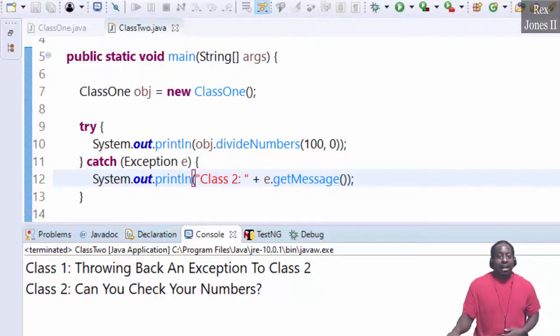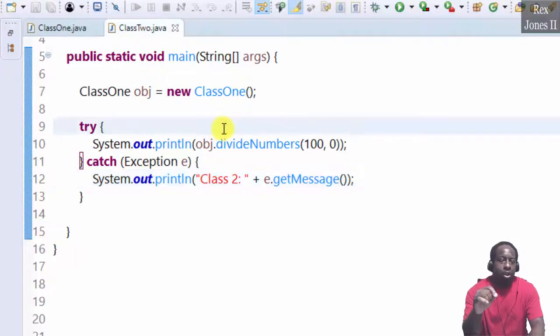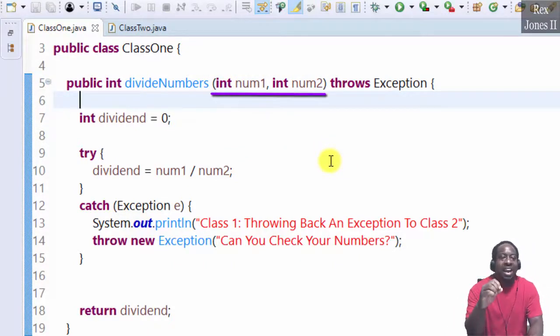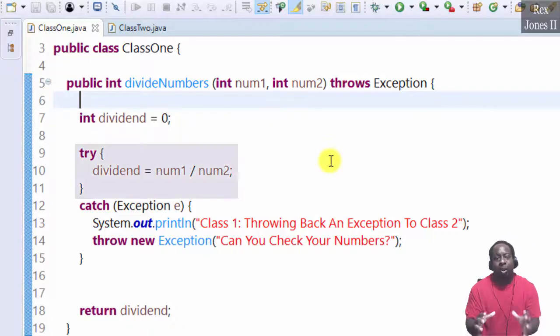To recap, Class 2 calls the divideNumbers method in Class 1. Class 1 receives values 100 and 0, which causes an exception. It tries the numbers, then catches the exception.